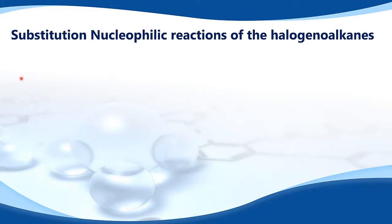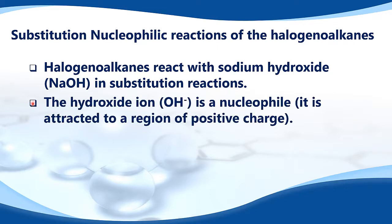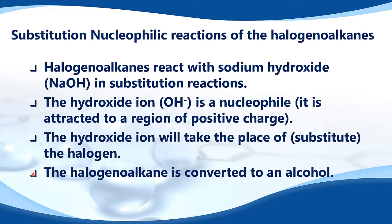Next, let's look at the substitution nucleophilic reactions of the halogenoalkanes. Halogenoalkanes react with sodium hydroxide (NaOH) in substitution reactions. The hydroxide ion, which is OH⁻, is a nucleophile — that means it's attracted to a region of positive charge. The hydroxide ion will take the place of, or substitute, the halogen, and the halogenoalkane is converted to an alcohol.